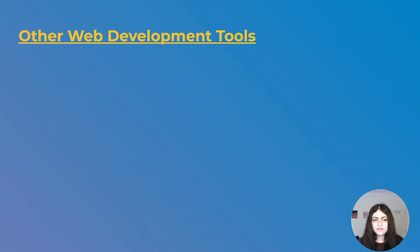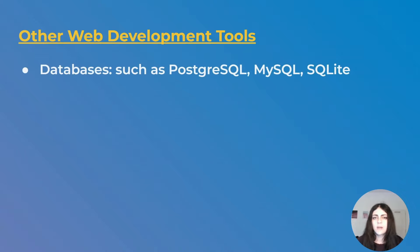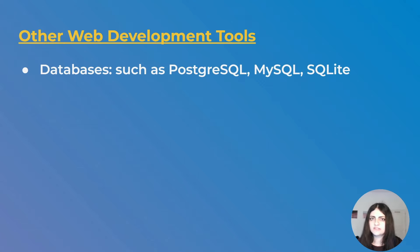Finally, let's talk about other web development tools and concepts you should know when getting into web development with Python. These are not specific to Python but are part of general web development. First: databases. Most web applications need to be connected to a database to store and handle user data. SQL databases like PostgreSQL, MySQL, and SQLite are common options, but you can also use a NoSQL database like MongoDB. Databases are a core component of every website, so you must learn them.